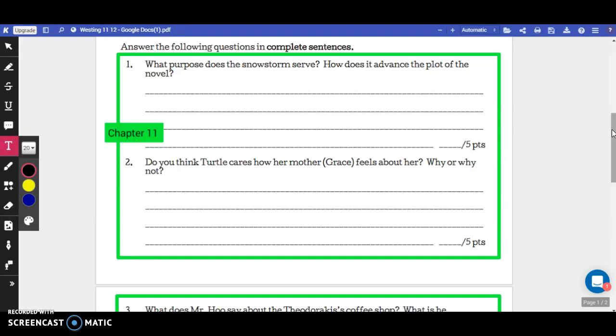So question 1 says, what purpose does the snowstorm serve? How does it advance the plot of the novel? What I'm asking you here is, what is it that the snowstorm allows to happen in the story? When the snowstorm occurs, what do the characters do? And is it something that they could have done without the snowstorm?